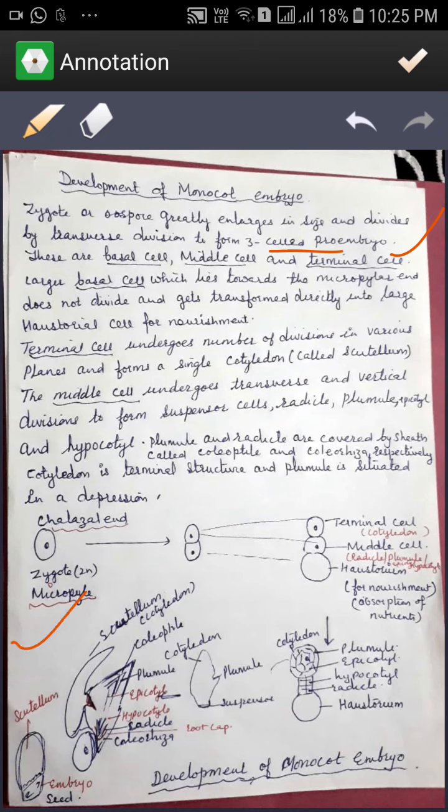This is the zygote. One end is towards the chalazal end and the other is towards the micropylar end. It will divide into three cells. The first one is known as basal cell, which lies towards the micropylar end.